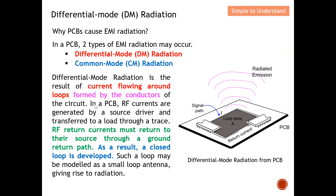In a PCB, RF current is generated by a source driver and transferred to a load through a trace. The RF return current must return to its source through a ground return path. As a result, a closed loop is developed. Such a loop may be modeled as a small loop antenna, giving rise to radiation. This is the simple definition of differential mode radiation — when the supply and return paths form a loop, differential mode radiation can occur.